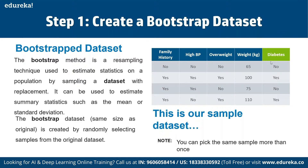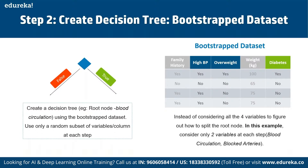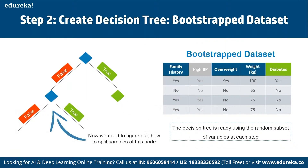For example, if the original data set has family history as 'no', we make random selections to create a bootstrap data set. Randomly selected samples in the bootstrap data set may repeat, as shown in the third and fourth entries. We then build a decision tree from this bootstrap data set, using blood circulation as the root node, and considering only two variables at each step — like blood circulation and blocked arteries — to determine the best split.